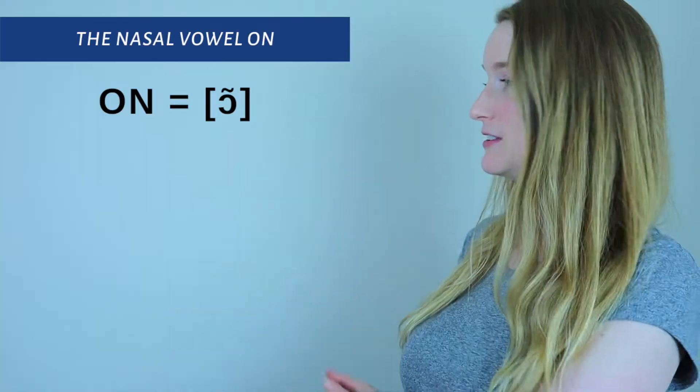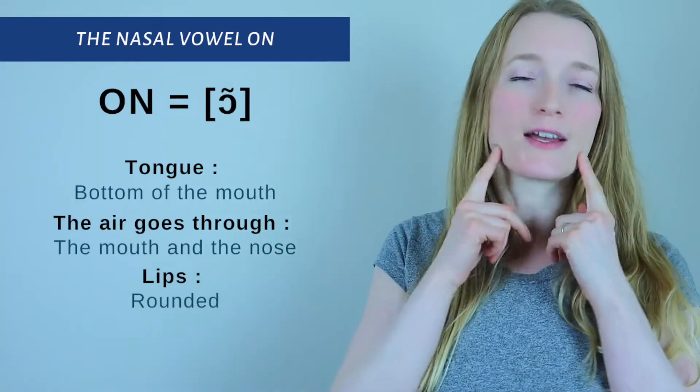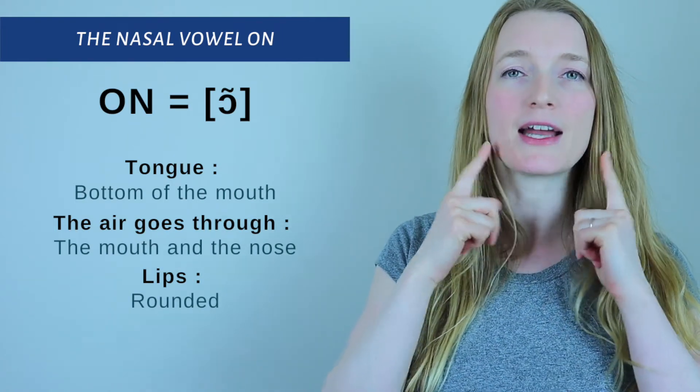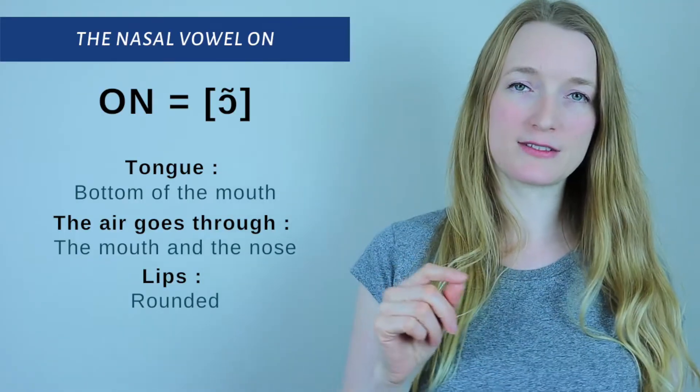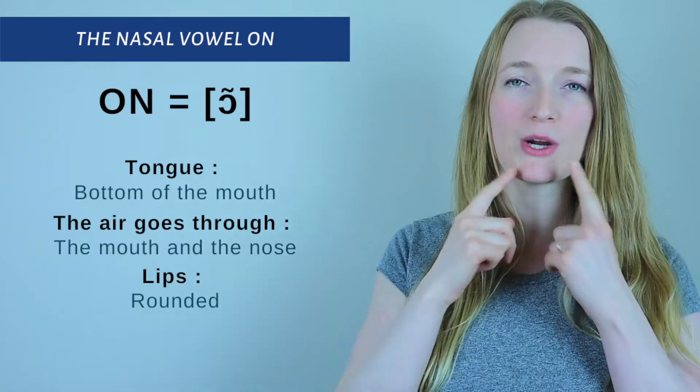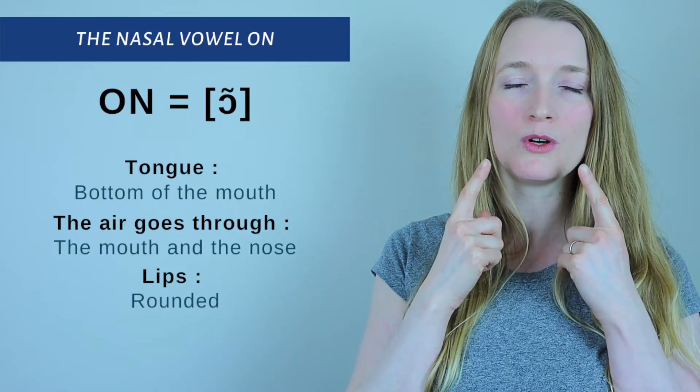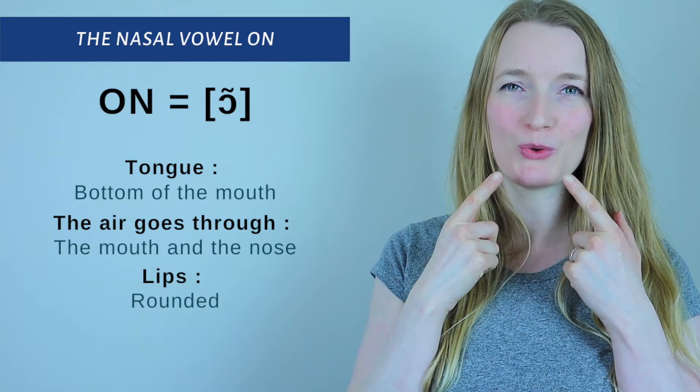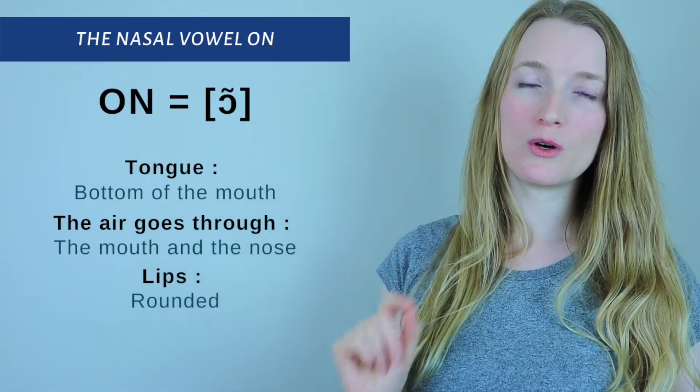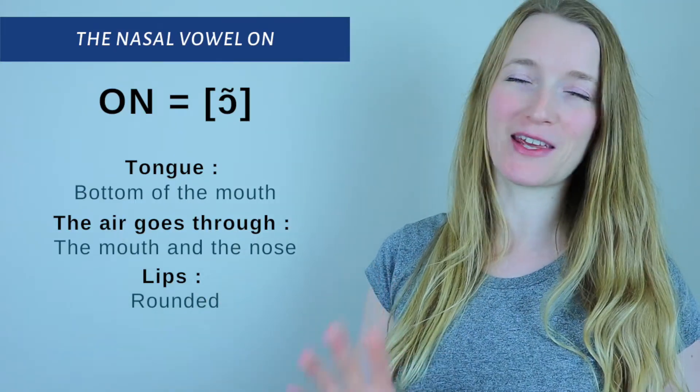But first let's see the sound for this lesson which is ON. So your tongue is going to stay at the bottom of your mouth. Then the air I told you goes through your mouth and through your nose. The lips are rounded. And then you just need to M with your lips rounded and open. Okay? Once again. Let me know in the comment section if you can make it or not.